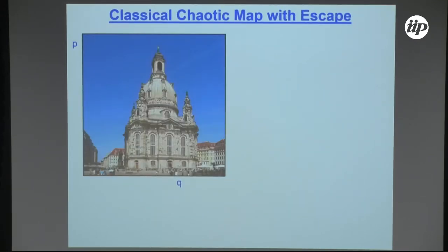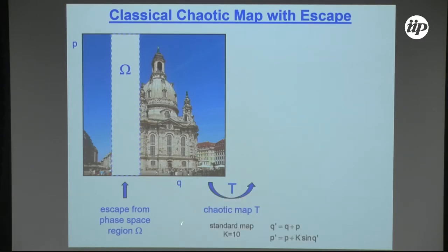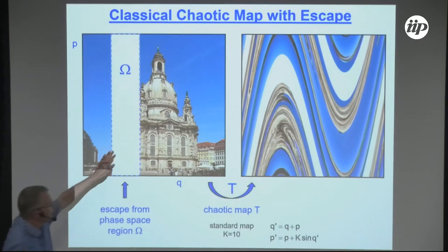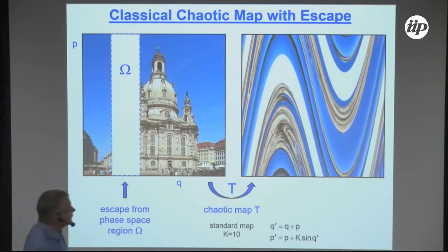Let me show the corresponding classical map I will use. It's a map on a torus. I define some escape region — whenever a trajectory comes into that region, it goes out of the system. The escape region omega. The map we use is the standard map at kicking strength 10, which is for practical purposes fully chaotic, but you can use whatever map you like. You have this typical stretching and folding, and for example, this white opening region is folded here.